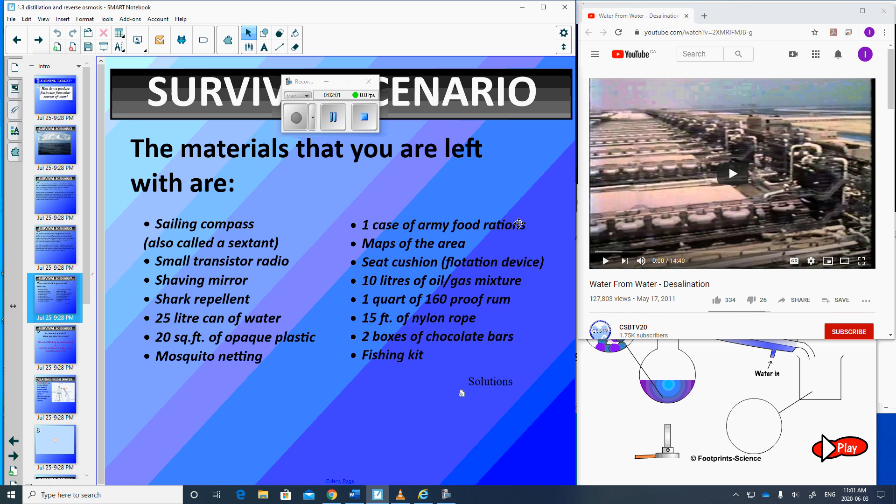One case of army food rations, maps of the area, a seat cushion, 10 litres of oil slash gas mixture, one quart or a litre of rum, 15 feet of nylon rope, two boxes of chocolate bars and a fishing kit. You can pause here, write down those 15 items in the order that are most important. I'm going to move on, give you the answers when we're done with the video.